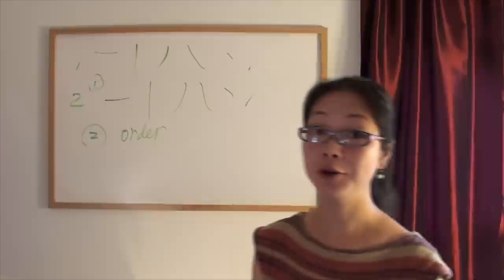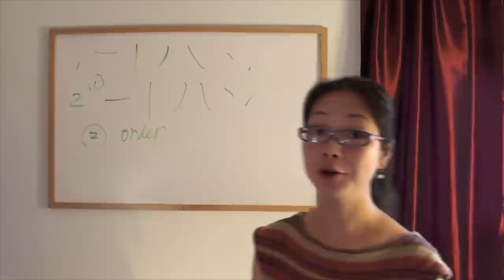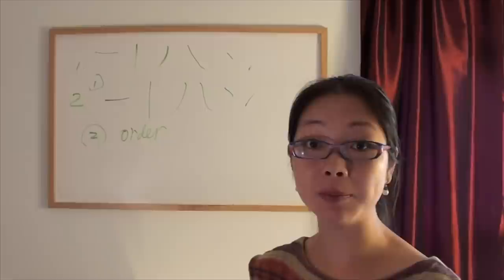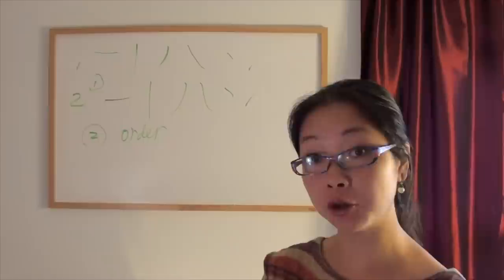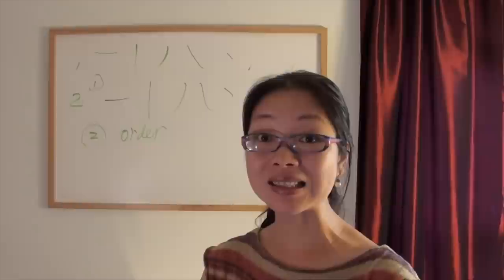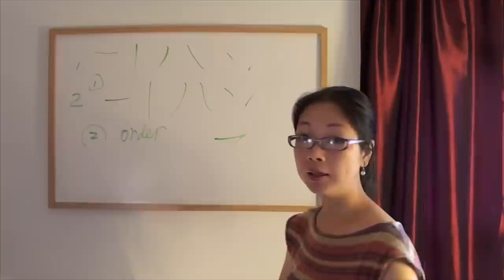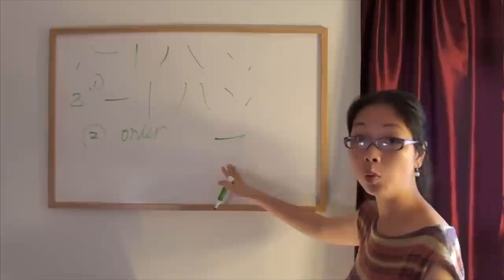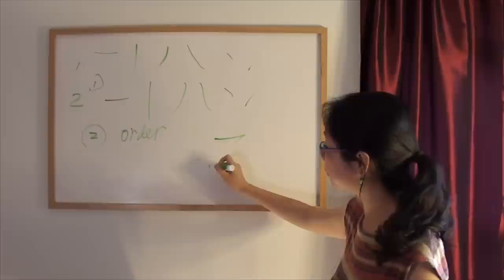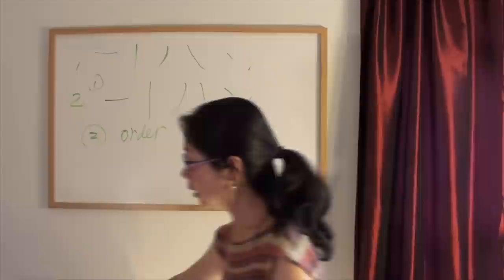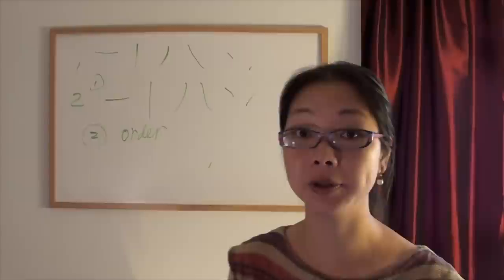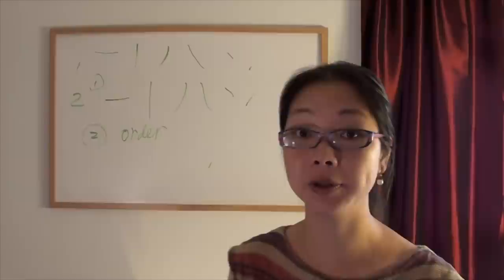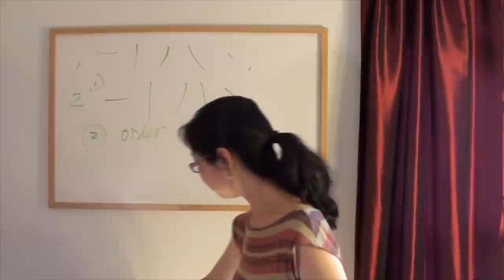If you read different textbooks, they will tell you different rules, but the basic rules are the same. Some people say there are 9 or 10 basic strokes — I told you there are 6. The reason is I consider some combined strokes as two parts put together. Different textbooks will tell you different things, but I think what I'm telling you is the simplest approach. Don't feel confused, and if you do, ask me.